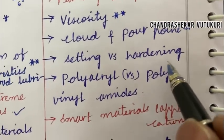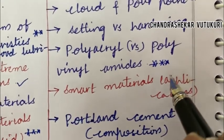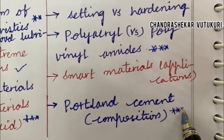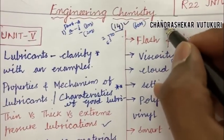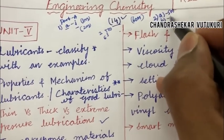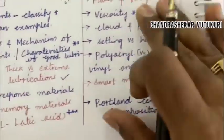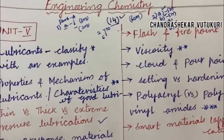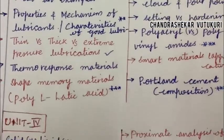Setting versus hardening and polyacrylic versus polyvinyl amides is said to be a short or long question this time for 5 marks. Smart material and its applications, and Portland cement along with its composition, is said to be a top question. Dear students, do not expect a direct 10-mark question — it means a combination of 5 and 5 split, or you may be getting A or B from one topic and C or D from another. You are supposed to write either AB or CD. I have done a video on question paper pattern also — please go through it, it is uploaded in the channel and I am going to post that in the comment section.